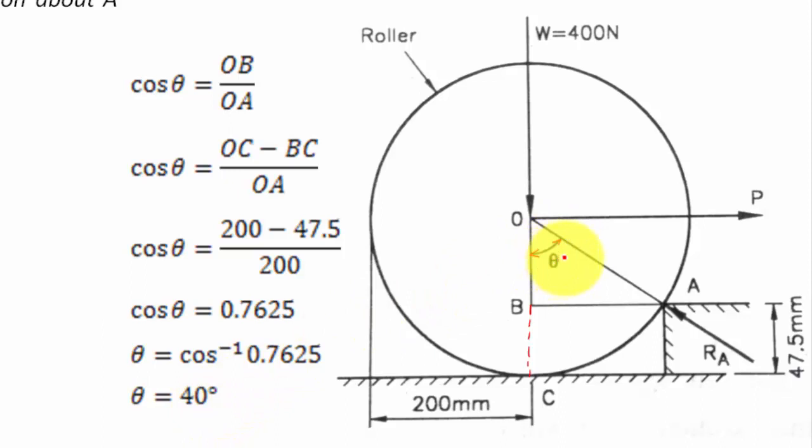So theta is equal to 40 degrees. Now I'll be resolving RA into its horizontal and vertical components. This is going to be the vertical component, RA cos 40, and one more component that this RA is going to have is to its left hand side in a horizontal way, RA sin 40.